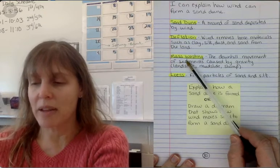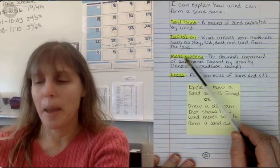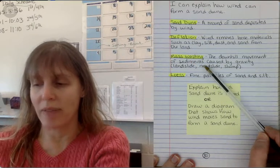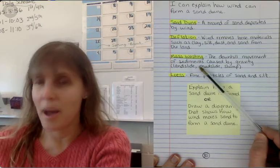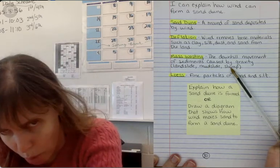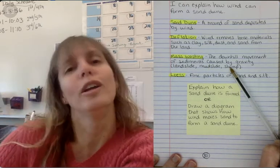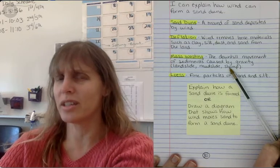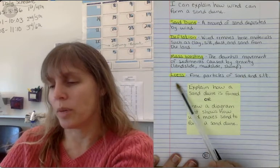Next term is mass wasting. Say it with me: mass wasting. It's the downhill movement of sediments caused by gravity such as landslide, mudslide, and slump. Slump, not slump, but slump. It's not like you think leaning forward. It's just a really slow motion landslide pretty much that you can't actually see happening, but it's happening because it's going so slow.